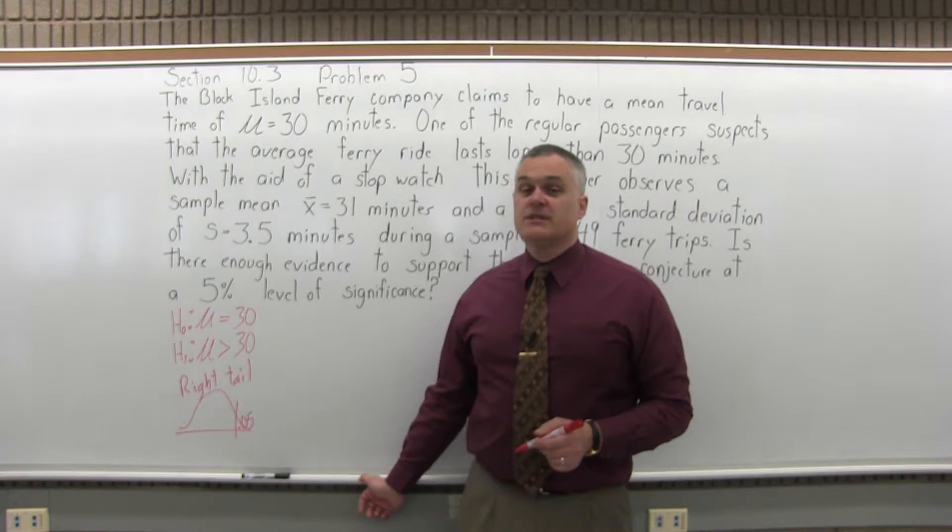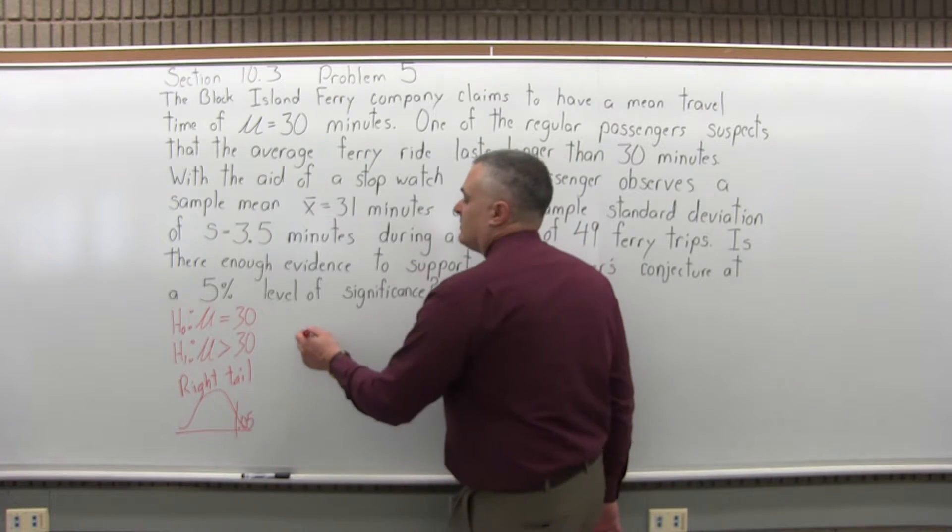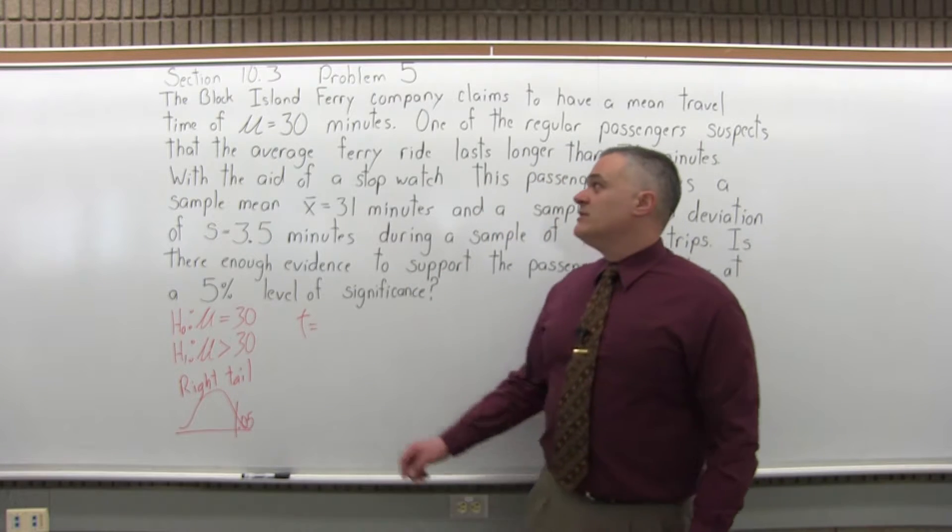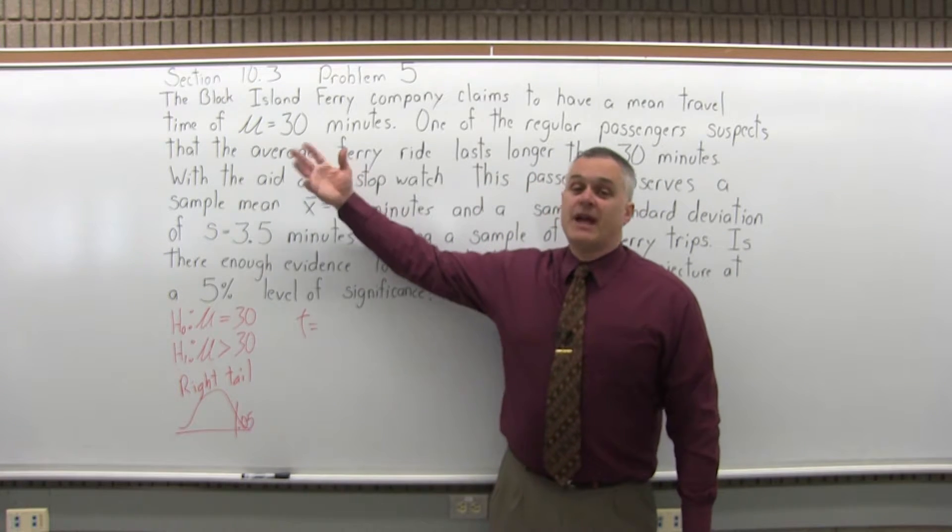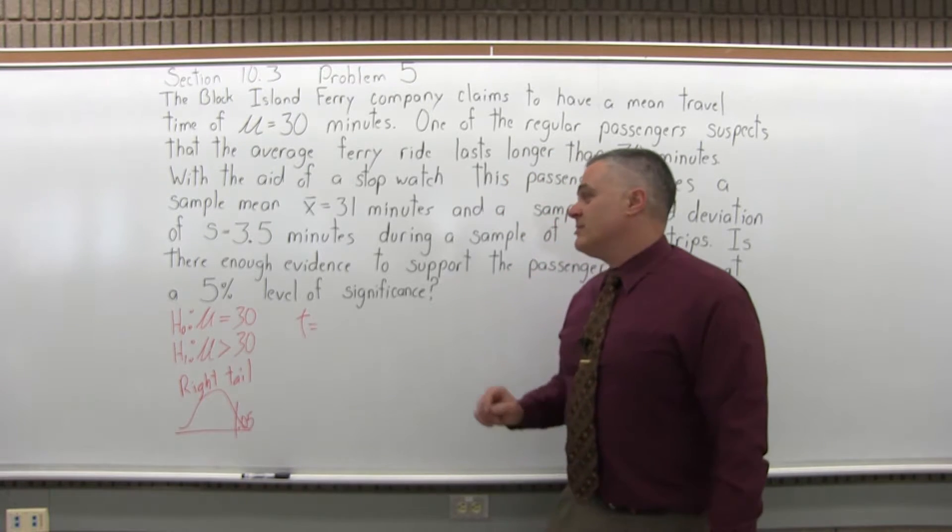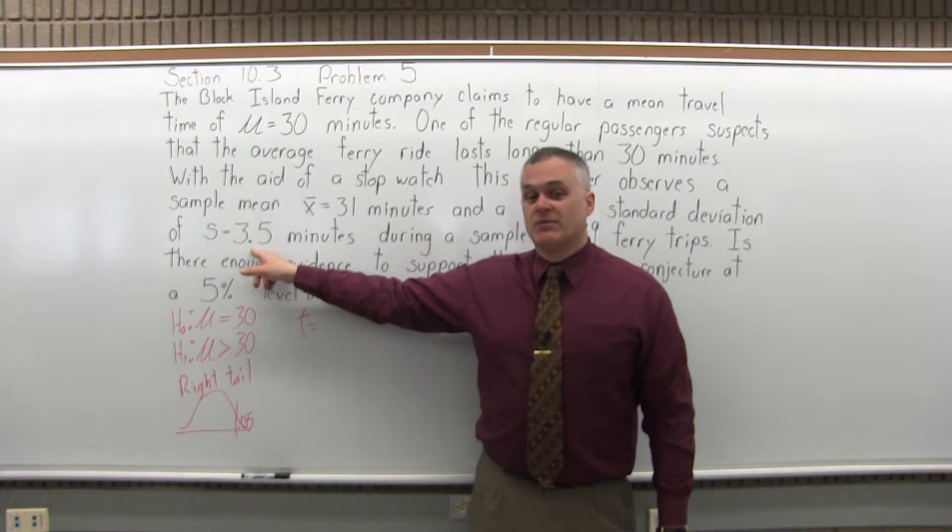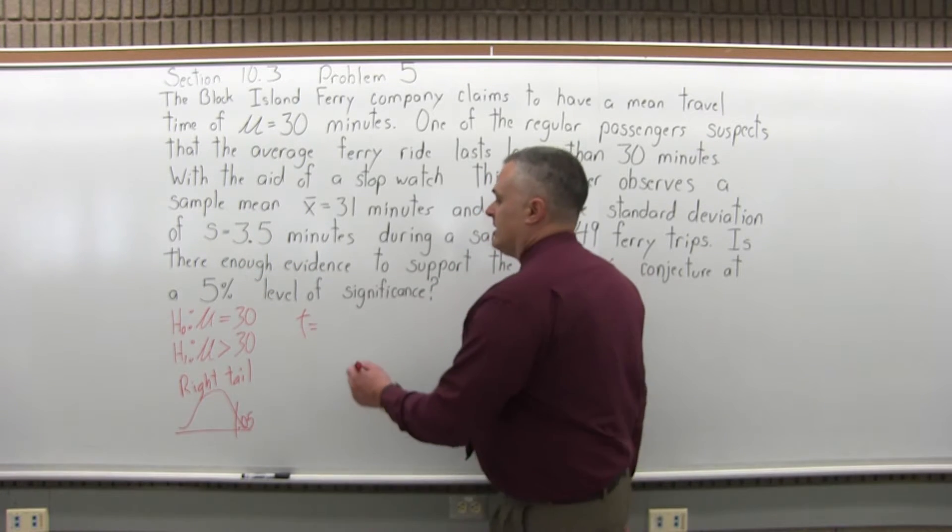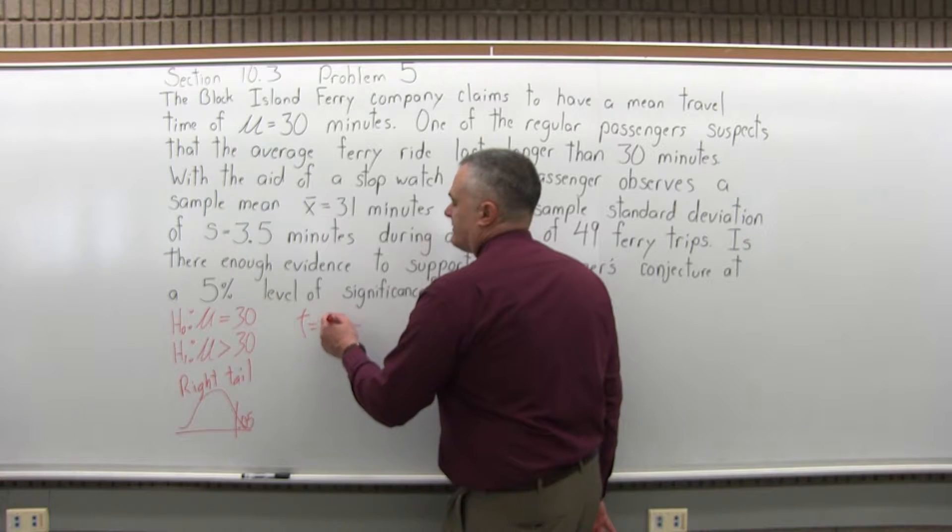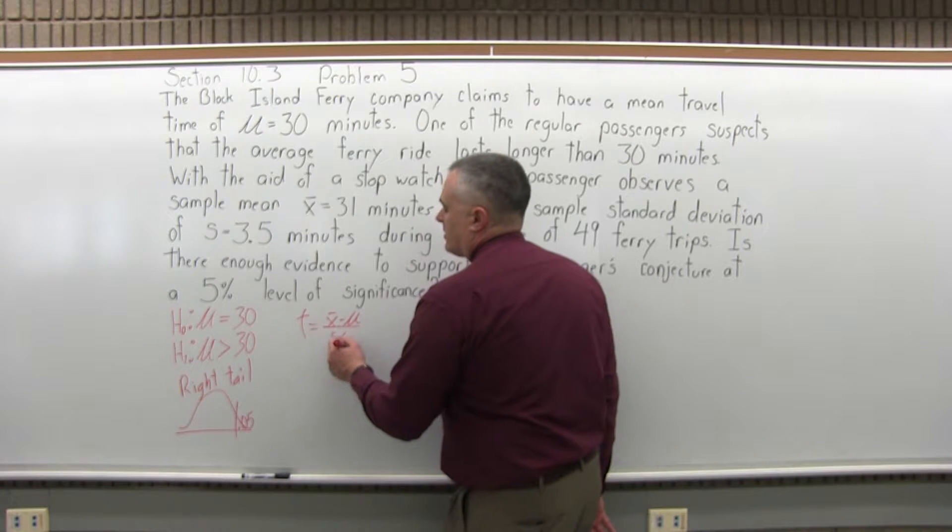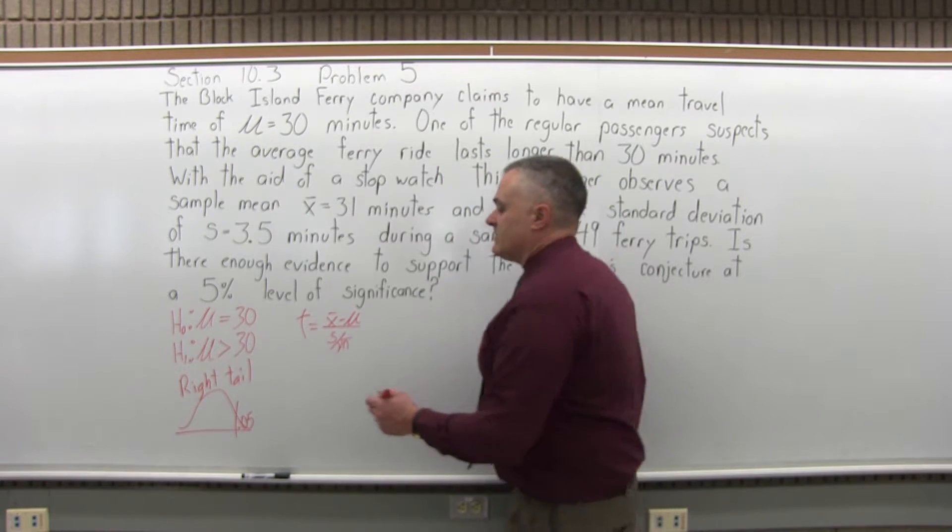So the next step, step 4, is compute the value for t. Now I'm computing t because I don't know the standard deviation of the entire population. If I happen to know that, I would compute z—that's a little bit different. But because it's the standard deviation of the sample that I'm dealing with, I want to compute t. So t equals x̄ minus μ over s divided by square root of n.